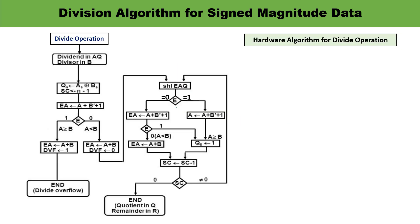This is the hardware algorithm for the divide operation. The dividend is stored in AQ and the divisor is in D. First, the sign of the result is identified — it is computed by taking the XOR of AS and BS, and that sign is transferred into QS. The sequence counter is set to n minus 1, since one bit of the word is used to represent the sign and the magnitudes are n minus 1 bits. Next, divide overflow is checked by subtracting B from A, performed by taking the 2's complement of B and adding it.